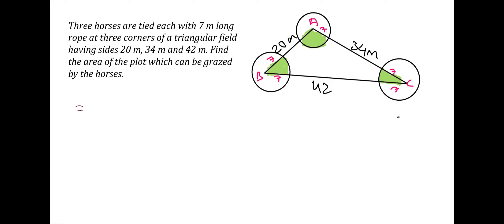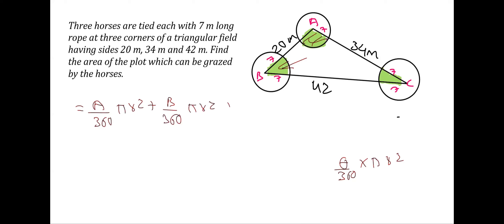The area of a sector is theta over 360 multiplied by pi r squared. The area of the sector at A is angle A divided by 360 times pi r squared. Adding the sector at B: angle B over 360 times pi r squared. And likewise for C: angle C over 360 times pi r squared. Pi r squared and 360 are common to all three terms.